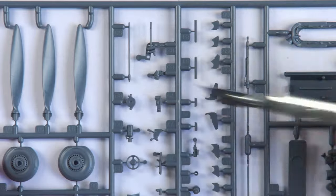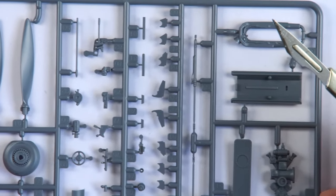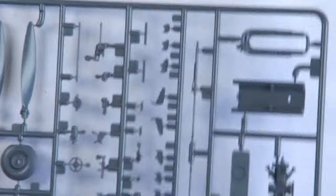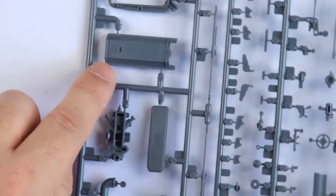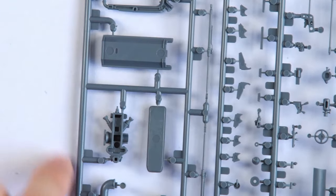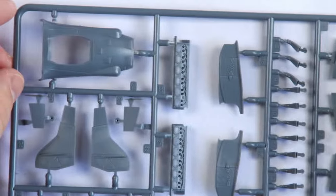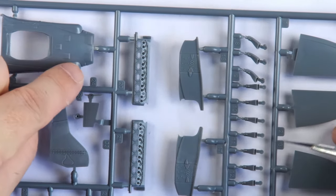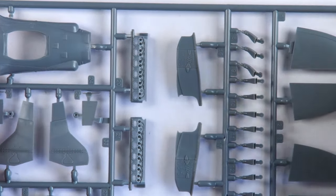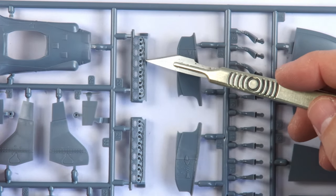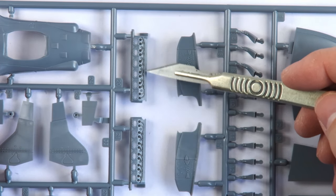Here are the propellers. More of the engine block. The distinctive lower cowling. And the cylinder banks, which are really nicely cast with all the ignition loops.